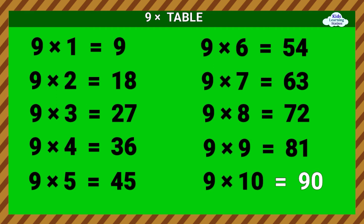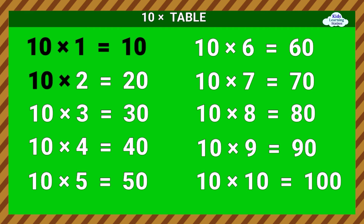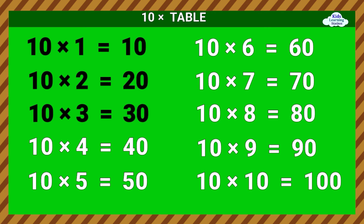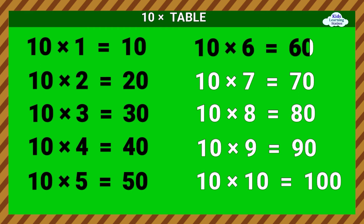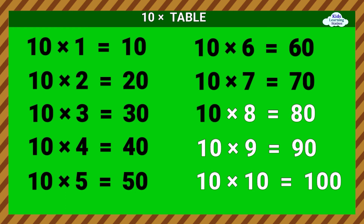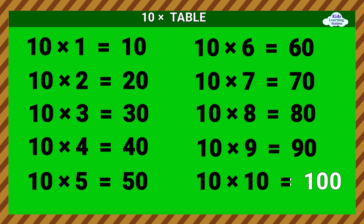9 times 10 equals 90. Ten Times Table. 10 times 1 equals 10. 10 times 2 equals 20. 10 times 3 equals 30. 10 times 4 equals 40. 10 times 5 equals 50. 10 times 6 equals 60. 10 times 7 equals 70. 10 times 8 equals 80. 10 times 9 equals 90. 10 times 10 equals 100.